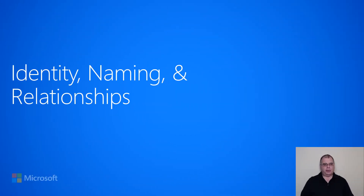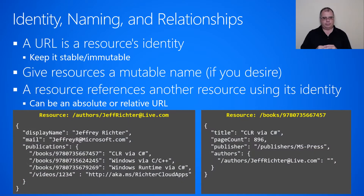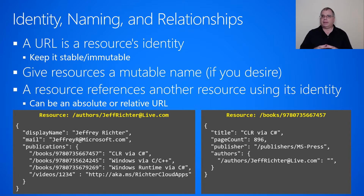In this section, we're going to talk about resource identity, resource naming, and relationships between resources. Resources are identified by their URL, and you should be able to keep the URL stable and immutable over time.